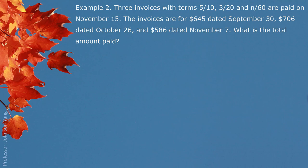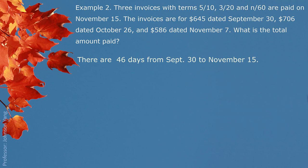Example 2: Three invoices with terms 5/10, 3/20, and N60 are all paid on November 15th. The invoices are: $645 dated September 30th, $706 dated October 26th, and $586 dated November 7th. The terms mean: if payment is within 10 days, 5% discount applies; if between 10 and 20 days, 3% discount applies; if beyond 20 days, the net price must be paid within 60 days.